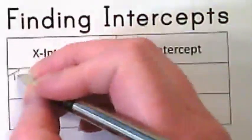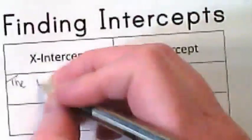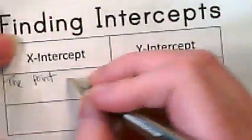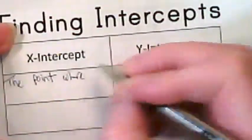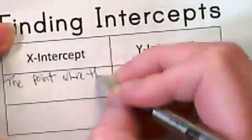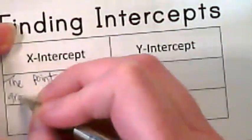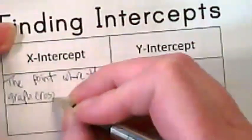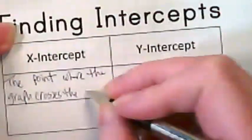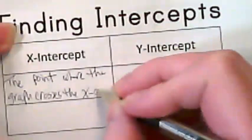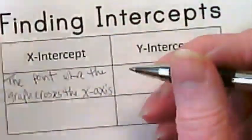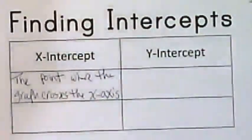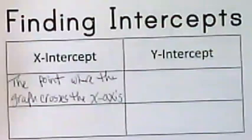The x-intercept is the point where the graph crosses the x-axis. It could be negative or positive — both of these could come from a negative or a positive graph.